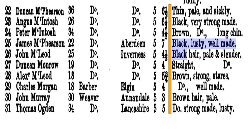You see more familiar surnames — McPherson, McIntosh, McCloid — and more diversity in the descriptions. Duncan McPherson is identified as thin, pale, and sickly — a lighter person. Angus McIntosh is described as black and very strong-made, alongside another McIntosh described as brown with a long chin. John Murray is described as having brown hair and being pale. Again, you see significant diversity within this particular group of people.